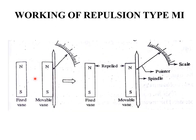Initially there is no current flow through the coil, so the fixed vane and the movable vane remain in their static position and the pointer shows zero deflection. When current flows through the coil, it creates a magnetic field, causing both the fixed vane and the movable vane to be polarized with the same polarity — both having their north pole at the top and south pole at the bottom. Like poles repel each other, and according to this repulsion and the current flow, the pointer shows deflection.